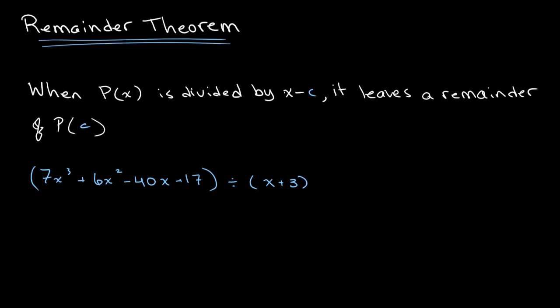So technically, or according to remainder theorem, it should leave a remainder of P(-3). So we're taking x + 3 as our x minus c. Therefore, P(c) is P(-3).